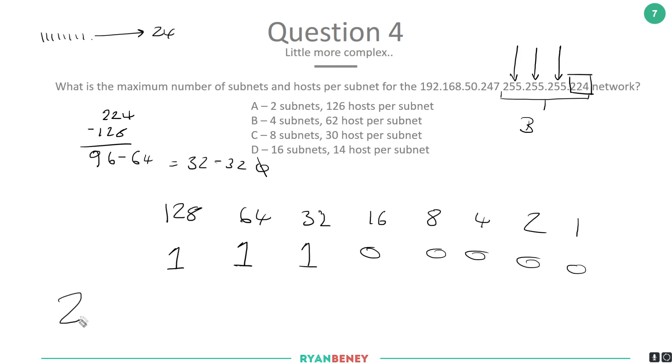Now we calculate hosts and subnets using our formulas. 2 to the power of bits turned on tells us subnets. 2 to the power of bits turned off minus 2 tells us hosts. For hosts: 2, 4, 8, 16, 32—that's 32 hosts. Minus 2 for network and broadcast gives 30 hosts. For subnets: 2, 4, 8—that's 8 subnets with 3 bits on. Looking at the answers, we know C is correct: 8 subnets, 30 hosts per subnet.